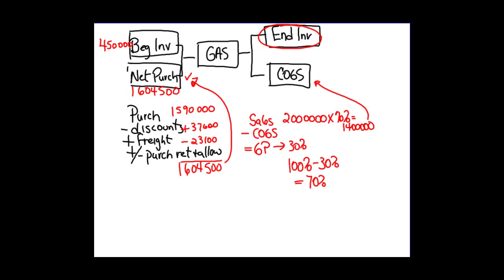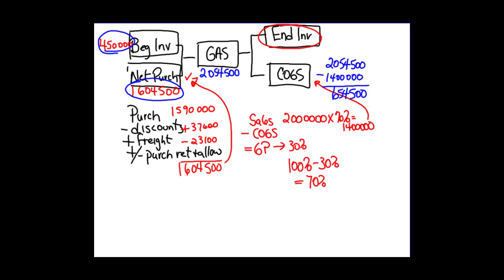Now we have all the information needed to calculate ending inventory. First, calculate goods available for sale: beginning inventory plus net purchases equals $2,054,500. Ending inventory and cost of goods sold must also equal that amount. We subtract cost of goods sold from goods available for sale — $2,054,500 minus cost of goods sold — giving us ending inventory of $654,500. That is our estimate of ending inventory.